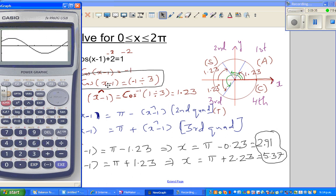And the question is, when is this x minus 1 equal to -1 divided by 3? So G-Solve, we want to find the x value when y is -1 divided by 3, just like that. So 2.91 is your first answer. And the second answer is 5.37.